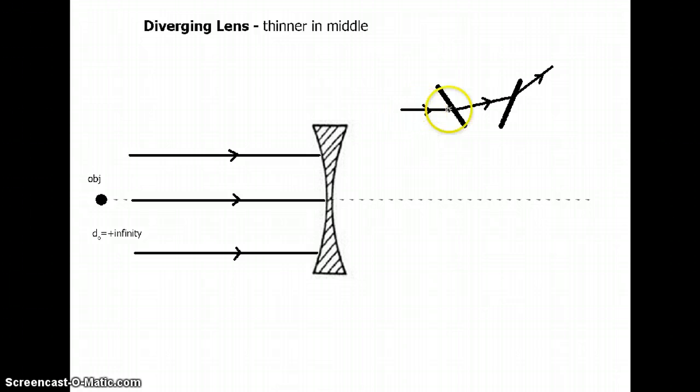So convince yourself that because of the shape of the lens the light gets deflected upward like so, and similarly for the light that comes in the bottom convince yourself that it gets deflected downward by getting bent toward the normal then away from the normal, both of those will end up with the light being deflected down like so.